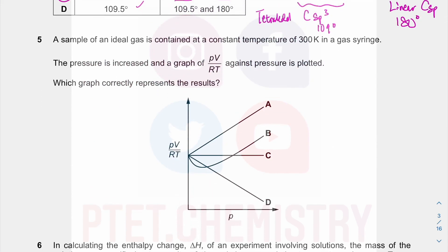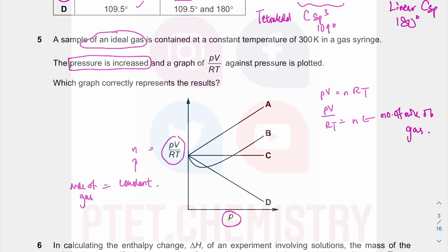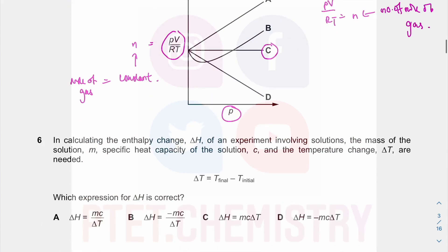Question 5: if you have a sample of an ideal gas, it follows PV = nRT, so PV over RT equals n, where n is the number of moles of gas. The pressure has been increased, but what happens to PV/RT, which equals n? Since you are not adding or removing gas, the moles of gas remain constant. For an ideal gas, if the mole of gas doesn't change, PV/RT remains constant even when you change pressure.